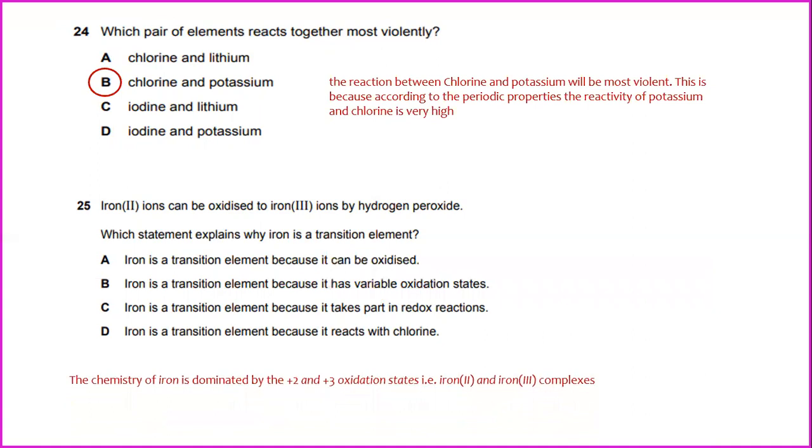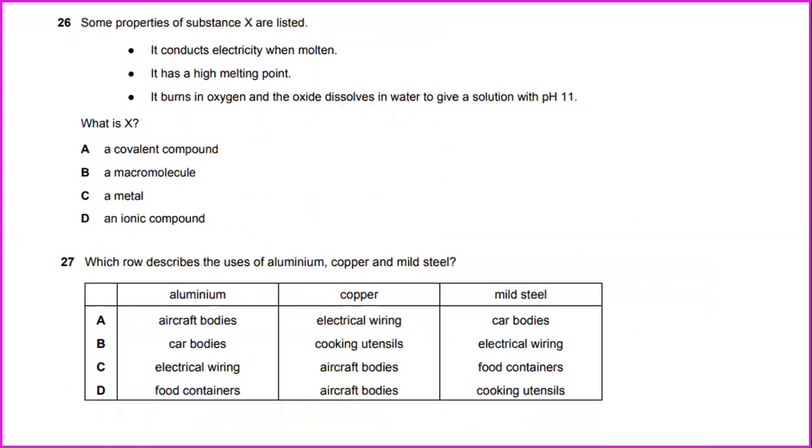Which statement explains why iron is a transition element? The answer would be the chemistry of iron is dominated by the positive 2 and positive 3 oxidation states, means that iron 2 and iron 3 complexes. The answer would be B, iron is a transition element because it has variable oxidation states.